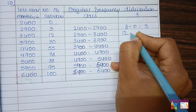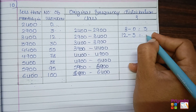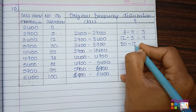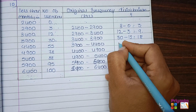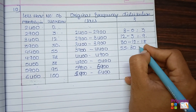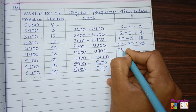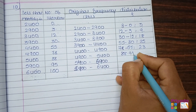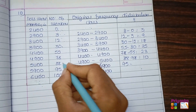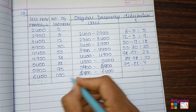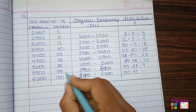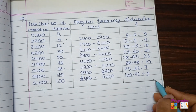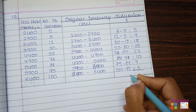Next, take 12 minus 3 to get frequency 9. Then 30 minus 12 gives 18. Continue: 78 minus 55, 95 minus 88, and 100 minus 95 to get the remaining frequencies. Don't forget to make the total to verify — since the question states 100 workers, the total of all frequencies should equal 100.